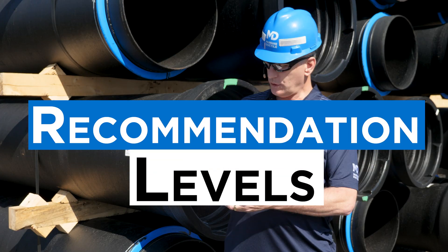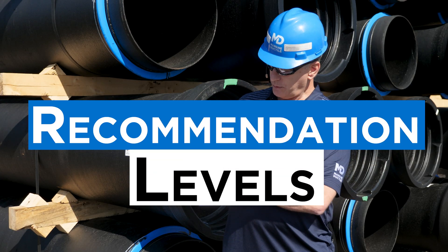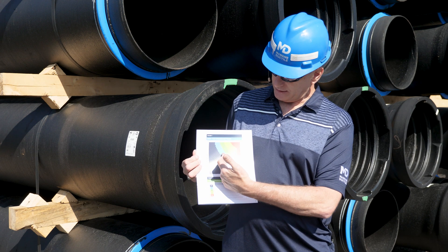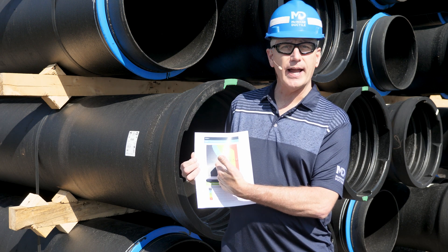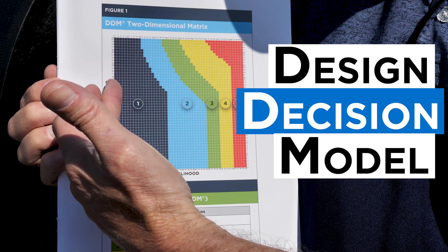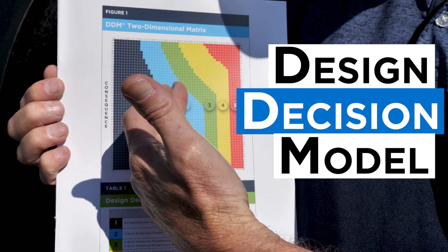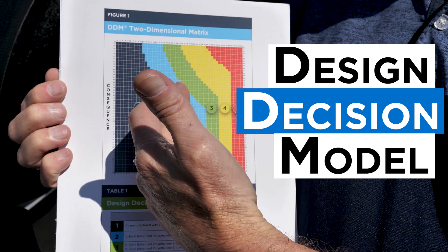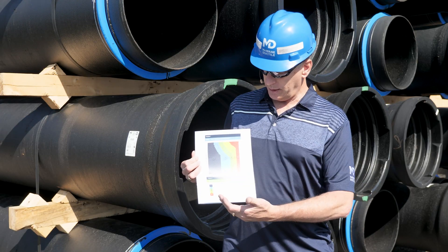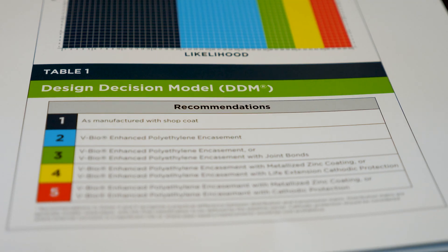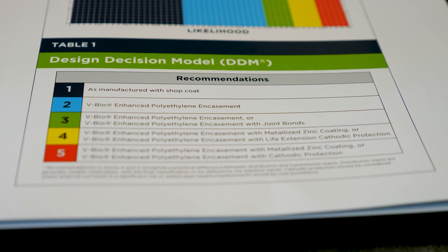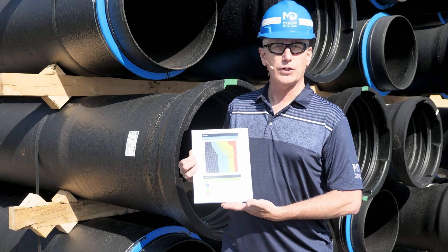Once we have a chance to total the consequences level and then look at the likelihood factor total, we're going to come to a point on the matrix that's going to be within one of the color-coded areas. And those color-coded areas correspond to the recommendation levels below on the chart.